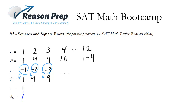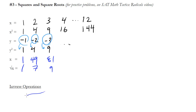How about 49? What is the number such that when I square it, I get 49? Well, it would be 7. And I could do 81 — what is the number such that when I square that number, I get 81? Well, it's 9. So it's the opposite, or as they call it, the inverse operation of squaring. To go from x squared back to x, we could square root it.